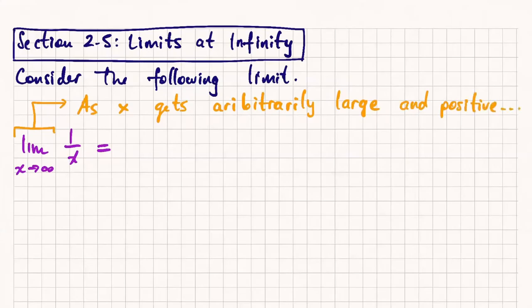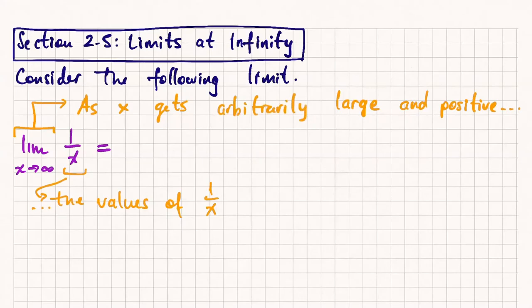So let's complete the sentence. As x gets arbitrarily large and positive, what happens to the values of 1 over x? So the values of 1 over x, they get closer to 0. They get smaller and smaller. They get arbitrarily small.